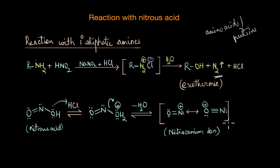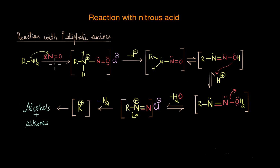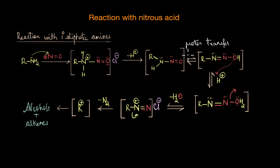The next step is the nucleophilic attack by the primary amine on the nitrosonium ion, giving a protonated species. With the loss of a proton, we get an N-nitroso intermediate. A proton transfer then takes place from the nitrogen to the oxygen atom. The oxygen atom further picks up a proton from the acidic medium, and with the release of a water molecule, we get an alkyldiazonium salt — RN2+ Cl−.